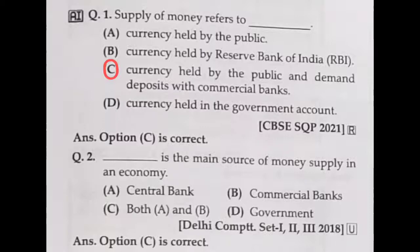Question number two: what is the main source of money supply in an economy? Normally the central bank issues currency, but at the same time commercial banks give loans and advances to the public. So both the central bank and commercial bank are the main sources of money supply in an economy. So option C — that is both A and B — is the correct answer.